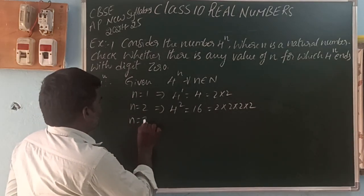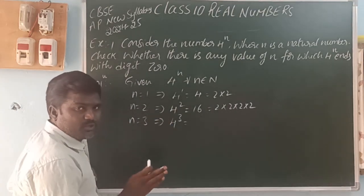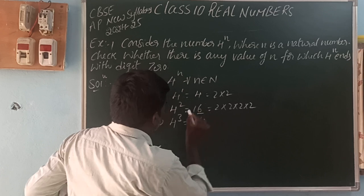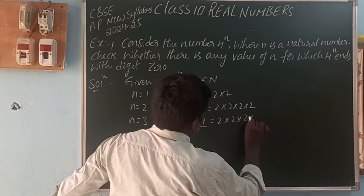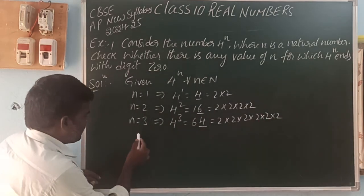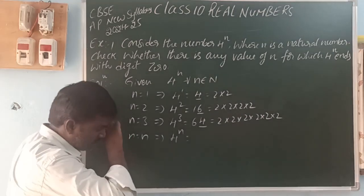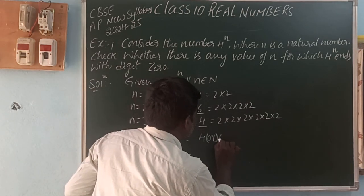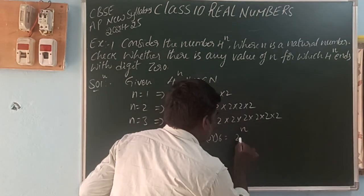When N=3, 4^3 ends with digit 4, and its prime factorization is 2 into 2 into 2 into 2 into 2 into 2. For all N belonging to natural numbers, 4^N ends with a digit 4 or 6, and its prime factorization is 2^N — it contains only the prime factor 2.